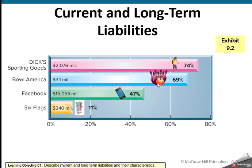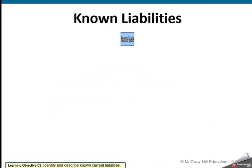This shows you the type of liabilities from different companies. Obviously, they're going to have some very large liabilities — both current and long-term — especially bigger companies that are expanding and have multiple ways of borrowing money.